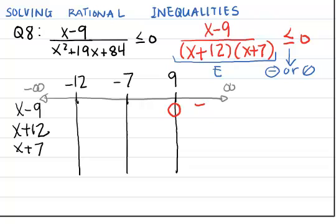x minus 9 is positive when x is greater than 9, and negative when x is less than 9. x plus 12 is positive when x is greater than negative 12, and negative when x is less than negative 12.